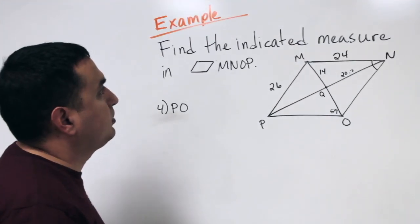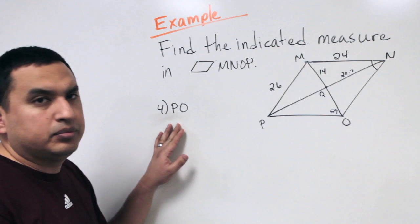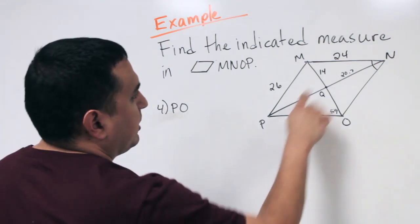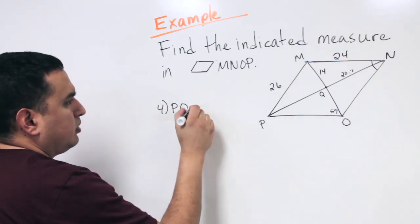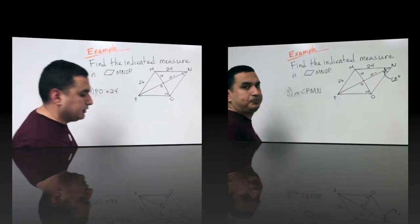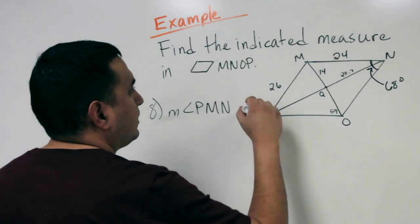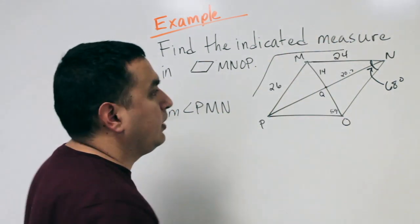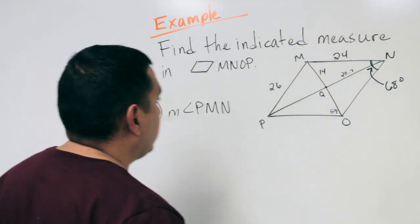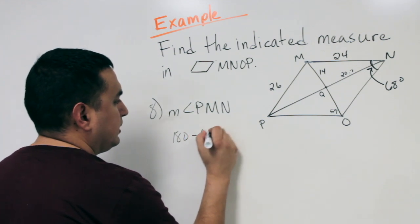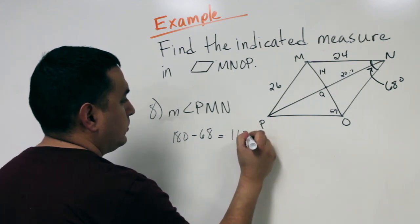In this next set of examples, we find different parts of the parallelogram. First, find the distance from P to O. Because opposite sides of the parallelogram are congruent, PO is 24 units. Next, find the measure of angle PMN — that's this outside angle. The consecutive angle is 68 degrees, and since consecutive angles are supplementary, the measure of angle PMN is 180 minus 68, which equals 112 degrees.